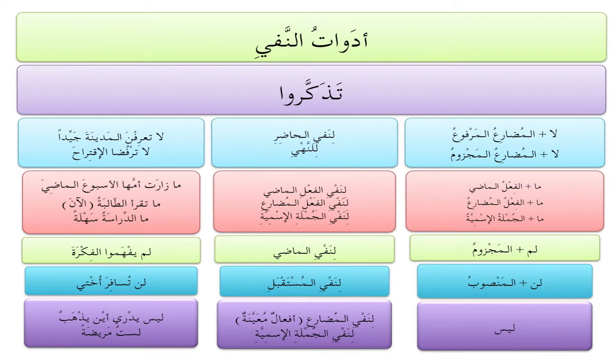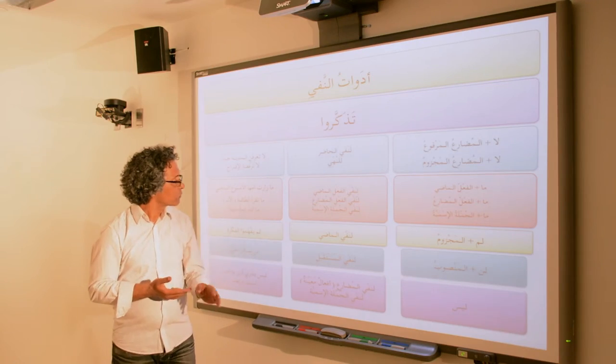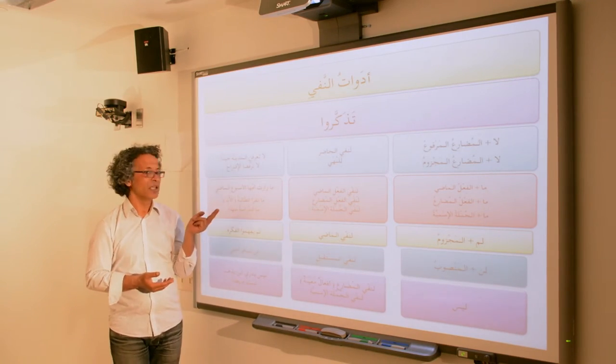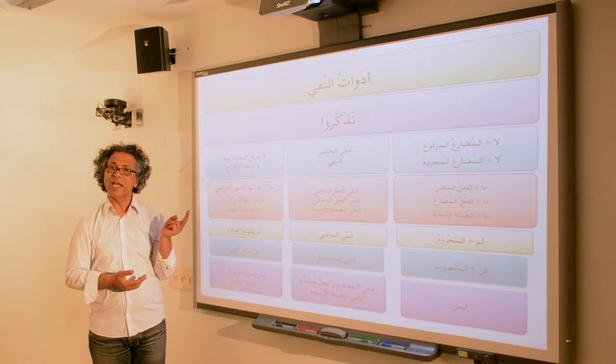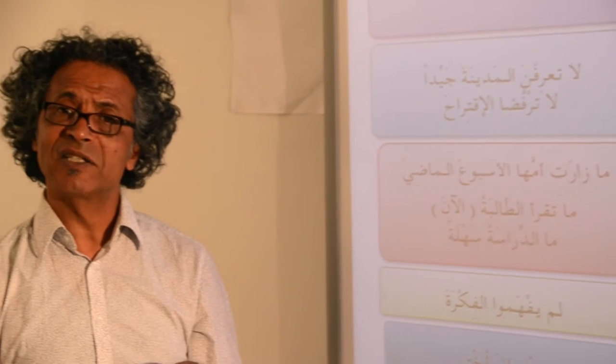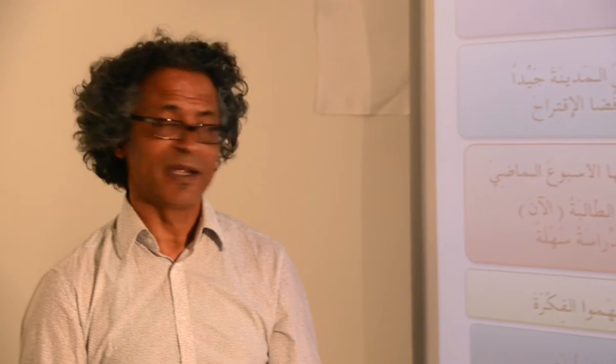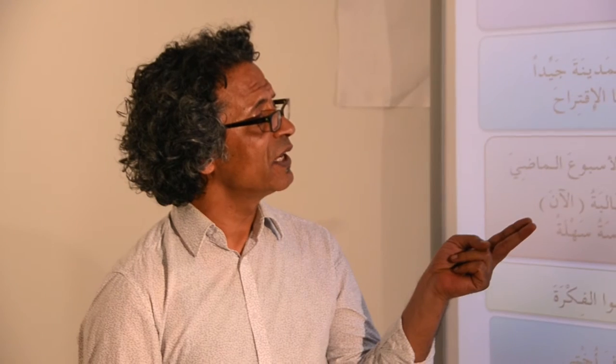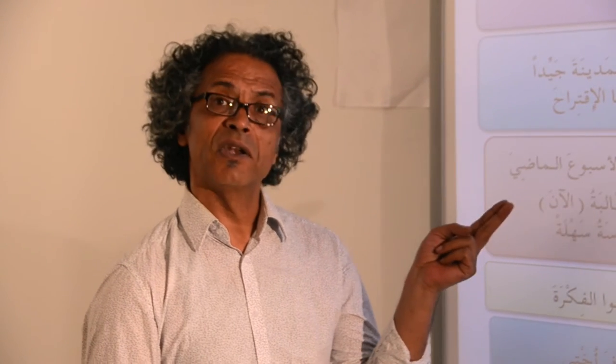ما مع الجملة الإسمية negates the nominal sentence and makes it belong to the group of كان وأخواتها. ما الدراسة سهلة — it's quite emphatic to use ما instead of ليس, as if you're saying 'studying is definitely not easy.'